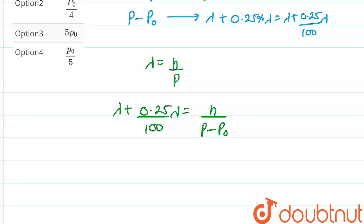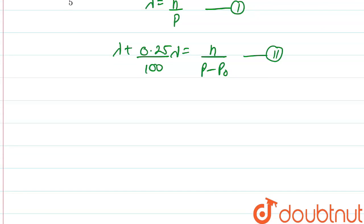Now we will be calculating the p from here. Suppose this is equation 1 and this is equation 2. Now taking lambda common from equation 2, we will be getting lambda into 1 plus 0.25 upon 100